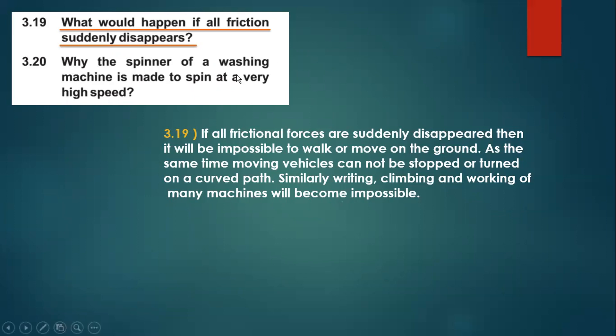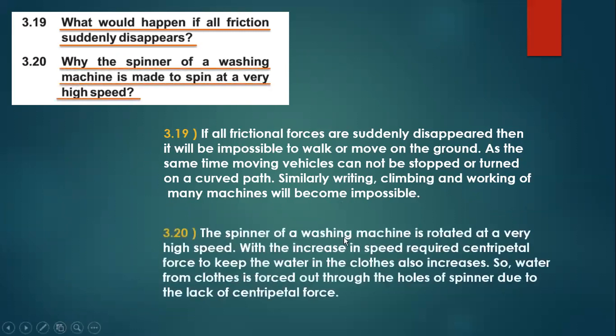Question 3.20 — why is the spinner of a washing machine made to spin at very high speed? The spinner is rotated at a very high speed; as the speed increases, the centripetal force required to keep the water in circular motion also increases. When the spinner moves at high speed, the centripetal force required exceeds what the holes in the drum can provide, so the water flies out through the holes and the clothes become dry.